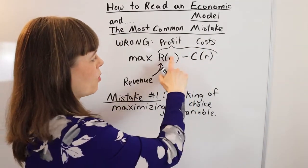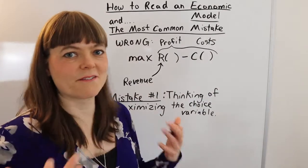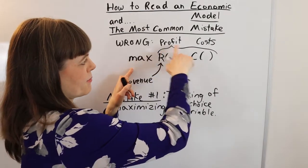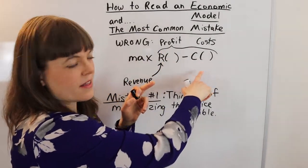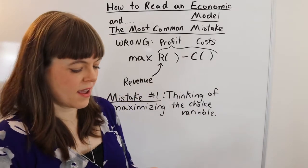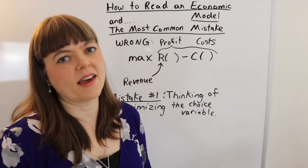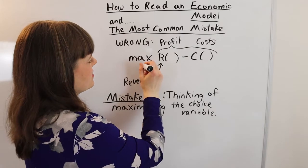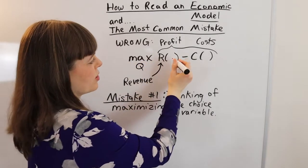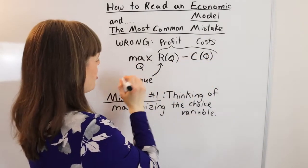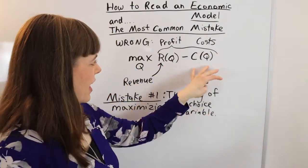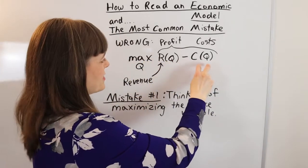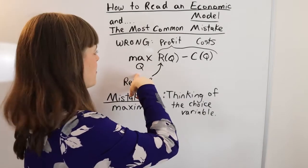We have to figure out what would be an appropriate choice variable to fix that mistake. If it's a firm maximizing profit — which is revenue minus cost — then what does the firm have control over? They have control over quantity or price, not both. To keep this simple, let the firm choose the quantity they will produce; that becomes our choice variable. Now the problem is fixed and the model actually makes sense: you are maximizing profit by choosing the quantity the firm is going to produce.